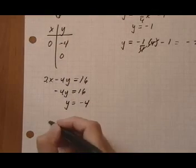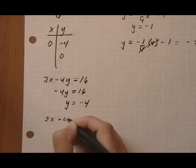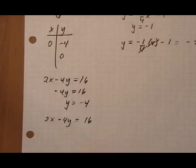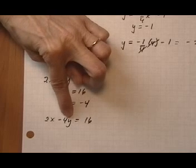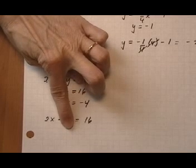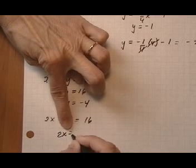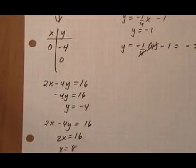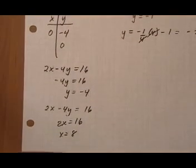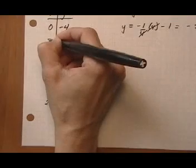Now we can pick y is zero because we can pick whatever we want. So if I pick y is zero, that whole term, 4 times y, would be 4 times zero. It goes away. And I'm left with 2x equals 16. Dividing both sides by 2, I get x equals 8. So when y is zero, x is 8.